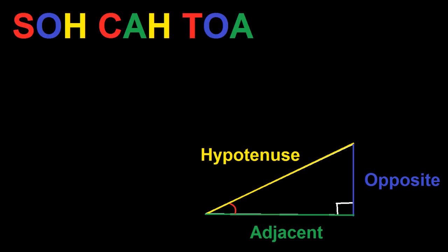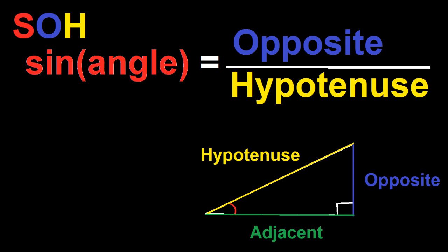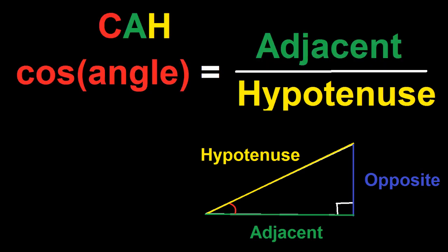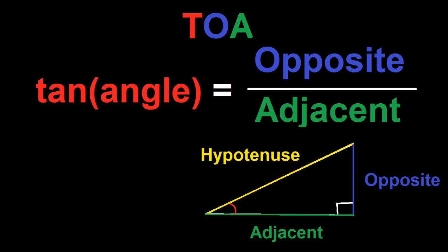How almost everybody remembers this is by SOHCAHTOA. The SOH in SOHCAHTOA means sine of angle equals opposite over hypotenuse. The CAH in SOHCAHTOA means cosine of angle equals adjacent over hypotenuse. The TOA in SOHCAHTOA means tangent of angle equals opposite over adjacent.